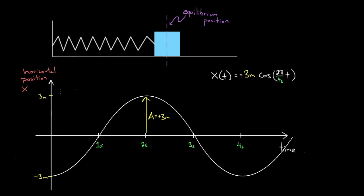So keep in mind: if you start up here, you're going to want to use cosine. If you start down here, you're going to want to use negative cosine. If you start right at equilibrium and go up, that's sine. If you start at equilibrium and go down, that's negative sine. That's what those functions look like.